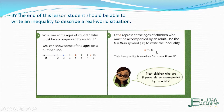Look at the question. What about the children whose age is 8? Should they be accompanied by an adult or not? Here, is it A less than or equal to 8, or less than 8? It is less than 8. So children who are 8 should not be accompanied by an adult.